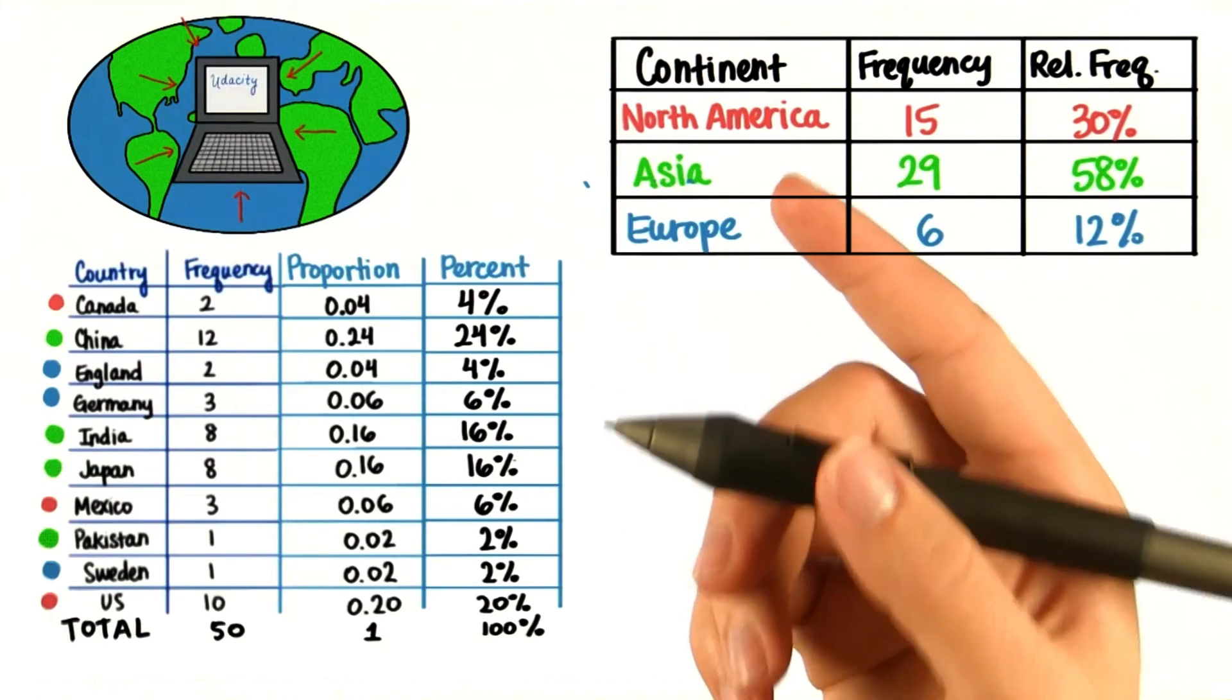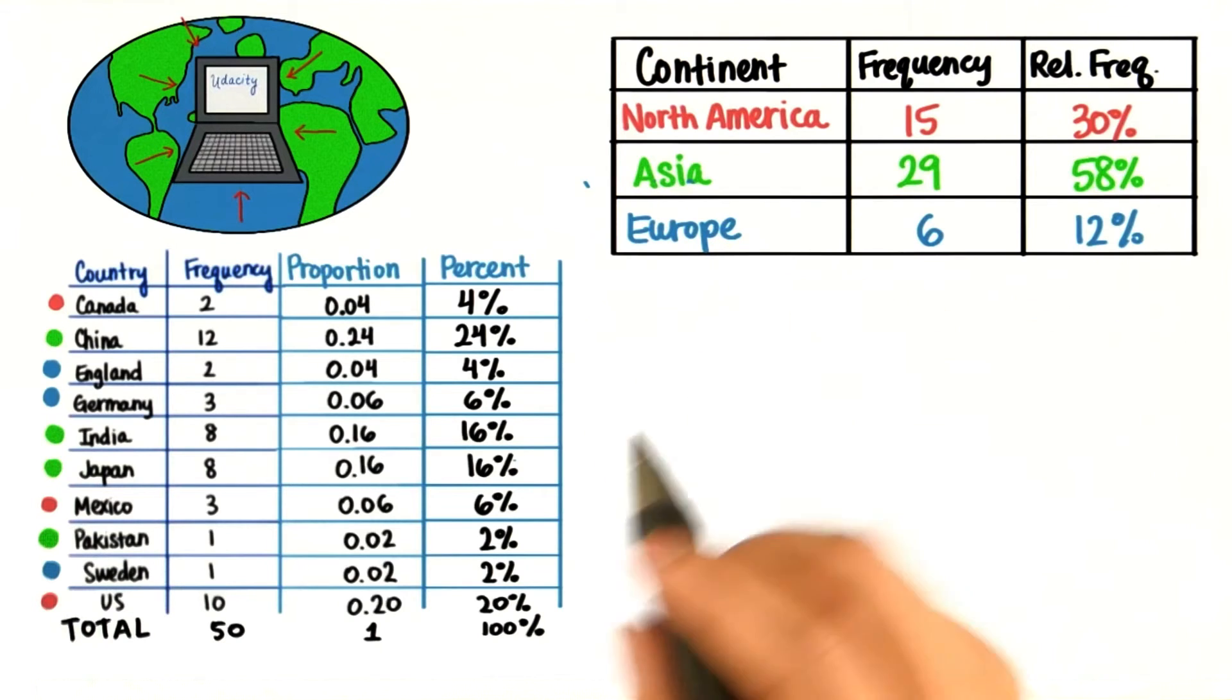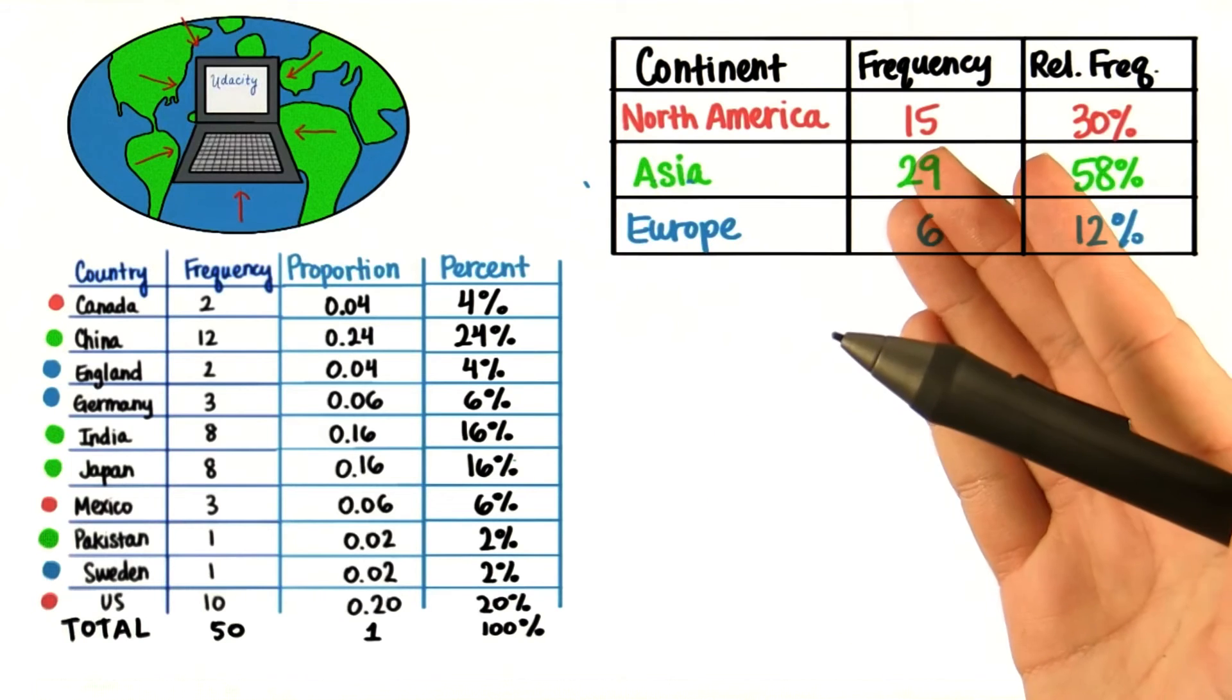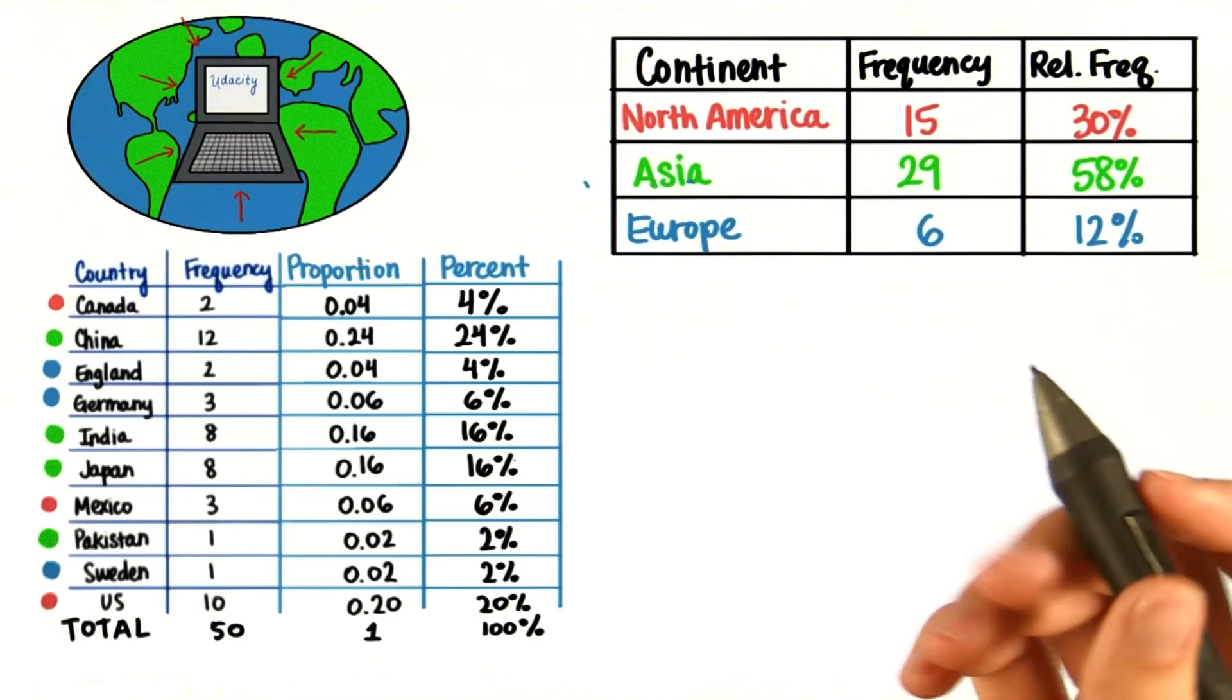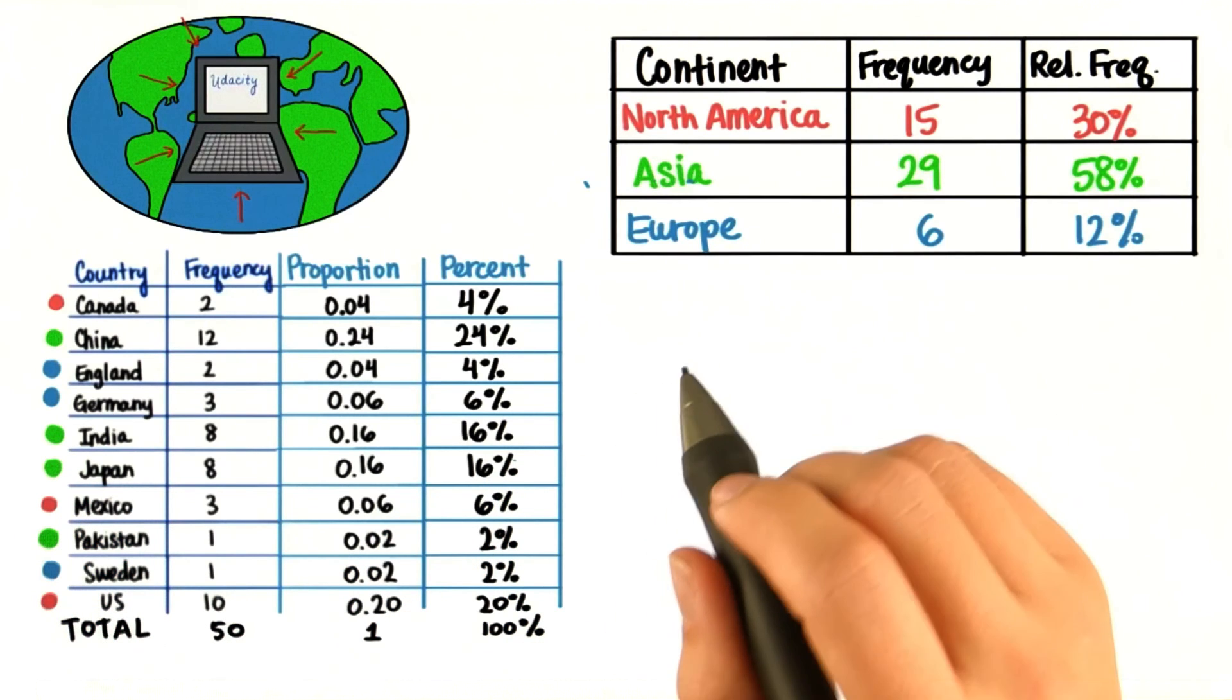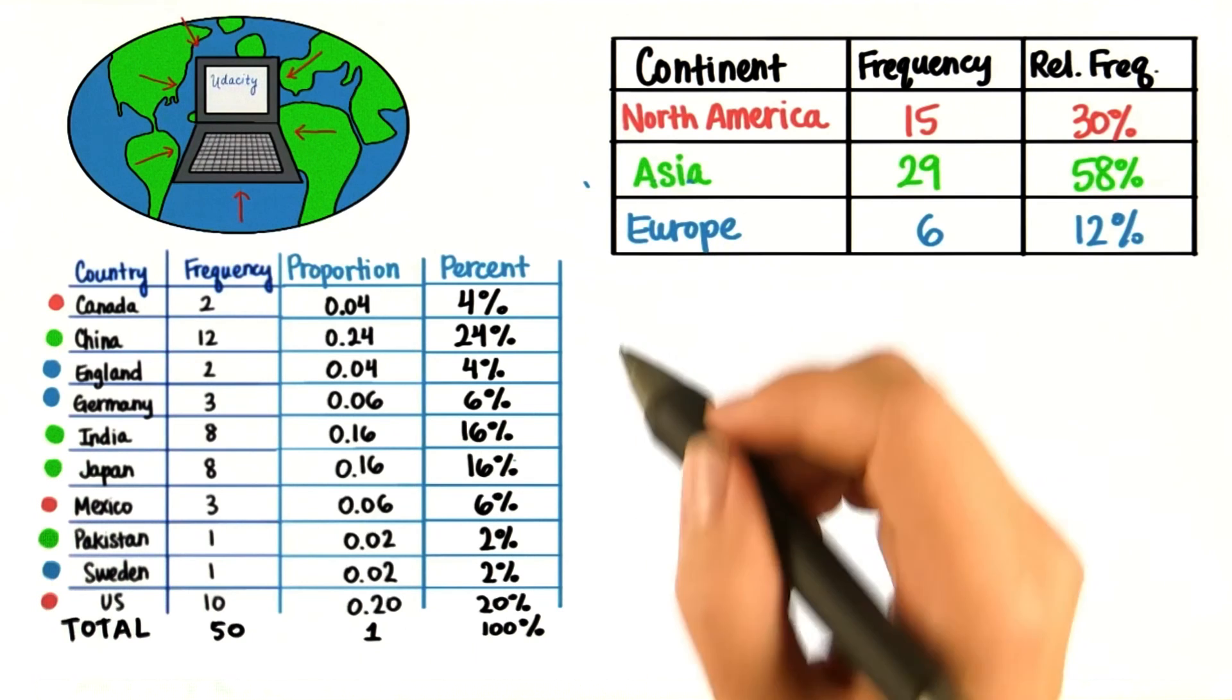But there's no one right way of presenting the data. It all depends on what kind of question you want to answer. In this case, if you want to know how many students are from North America, organizing it like this is best. But if you want to know how many students are from India or other specific countries, organizing it like this is best. The key is to know how you're going to organize your data based on the questions that you want to answer.